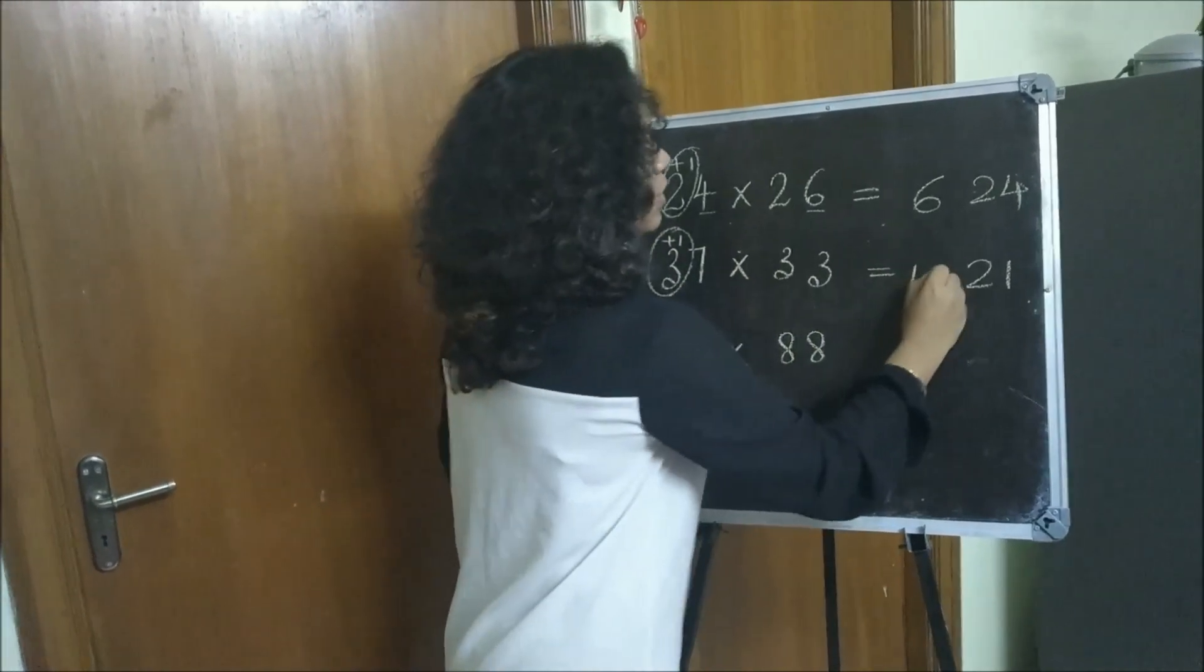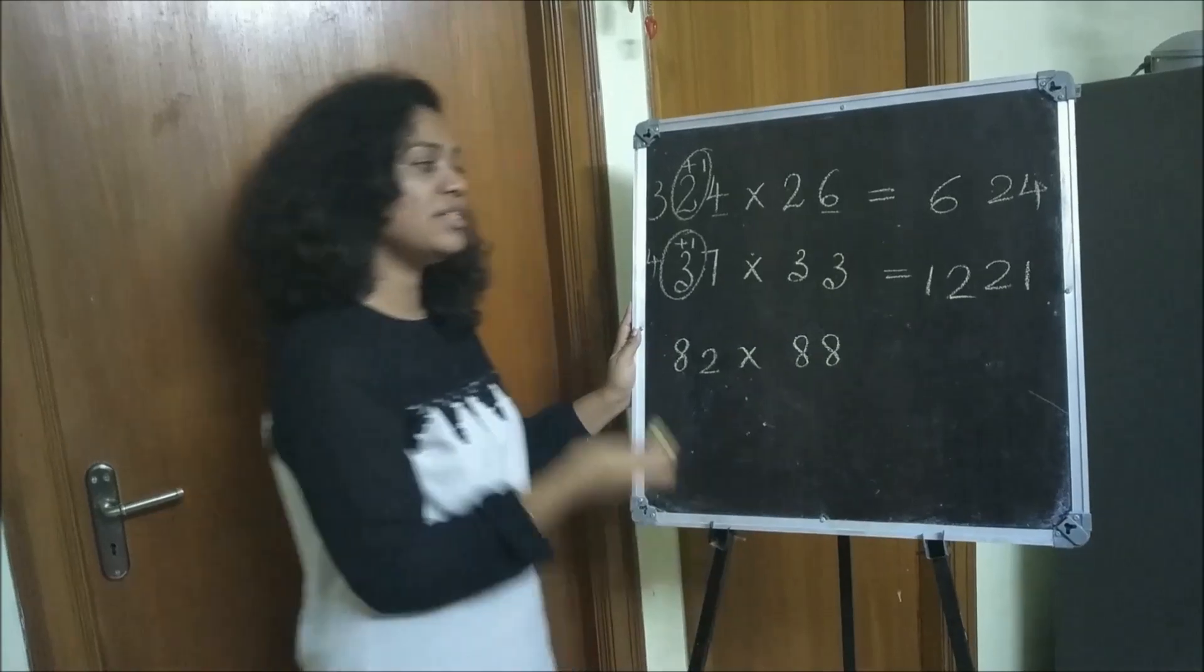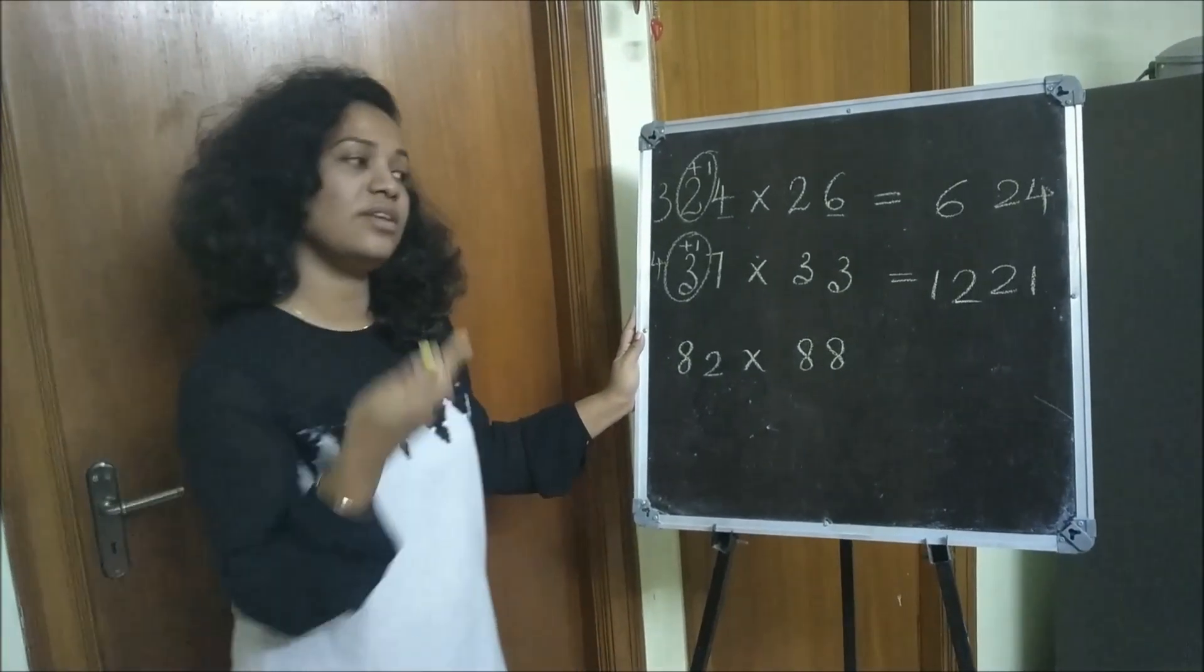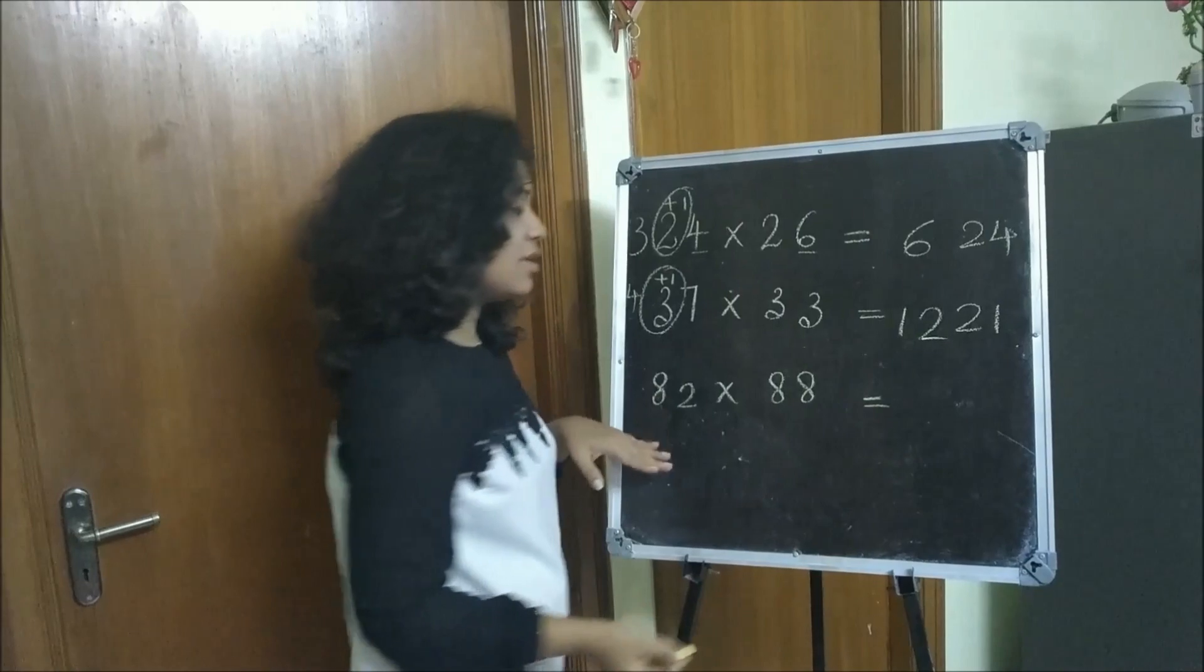3 fours are 12, so your answer is 1221. What will be your answer here?